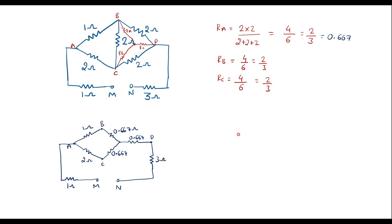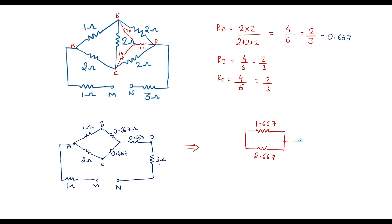Let me simplify this circuit further. The 1 ohm and 0.667 ohm in series give 1.667 ohm. The 2 ohm and 0.667 ohm in series give 2.667 ohm. The 3 ohm and 0.667 ohm in series give 3.667 ohm.